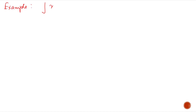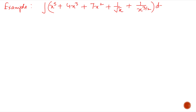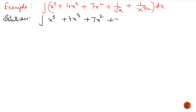Next example: Integrate x⁵ + 4x³ + 7x² + 1/√x + 1/x^(3/2) with respect to x. First simplify or rewrite the question, and we will get integration of x⁵ + 4x³ + 7x² + x^(-1/2) + x^(-3/2) with respect to x.